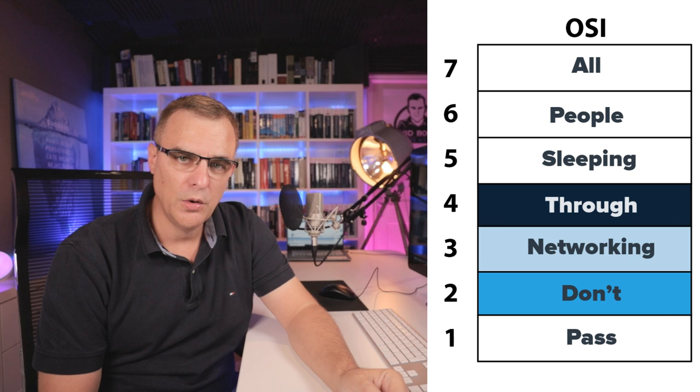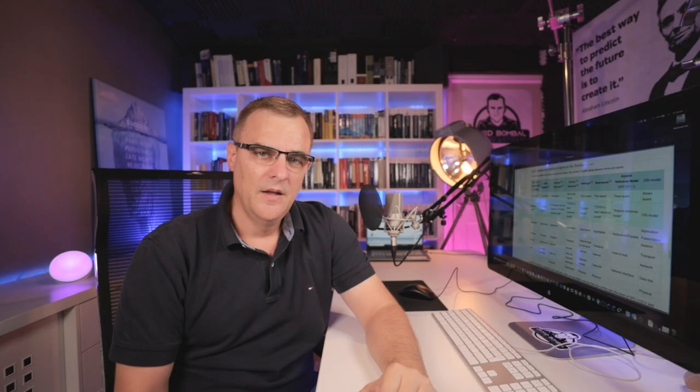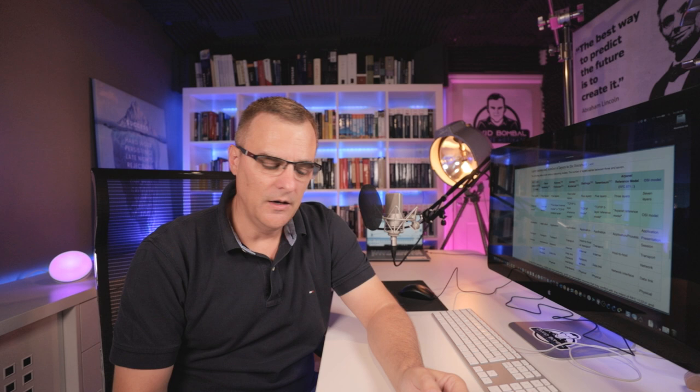In the previous version of the CCNA, we were taught the OSI model, which consists of seven layers. Starting at the top — it's inverted, from layer seven to layer one — the mnemonic is 'All People Sleeping Through Networking Don't Pass,' though it's actually: application, presentation, session, transport, network, data link, and physical layer. That caused a lot of confusion, and a lot of people have debated how relevant the OSI model is in today's networks.